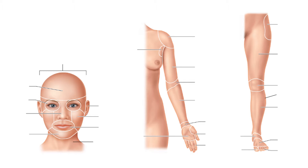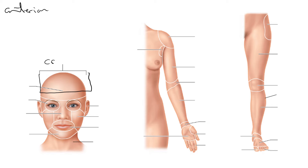We're going to do another short video of anatomical regions. These are all anterior views of the body. We have the head here, and we have the skull encasing the brain. We refer to this as the cranium.